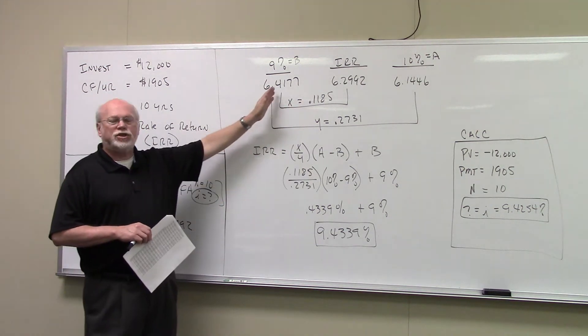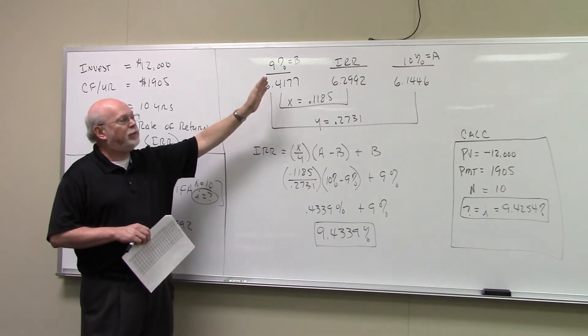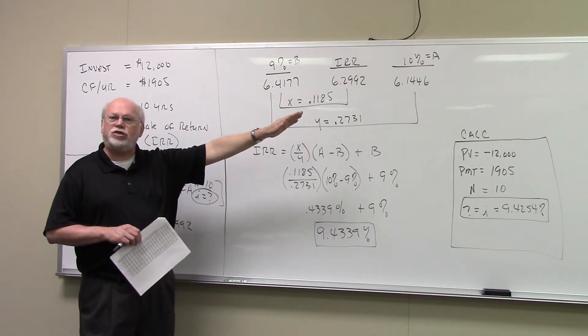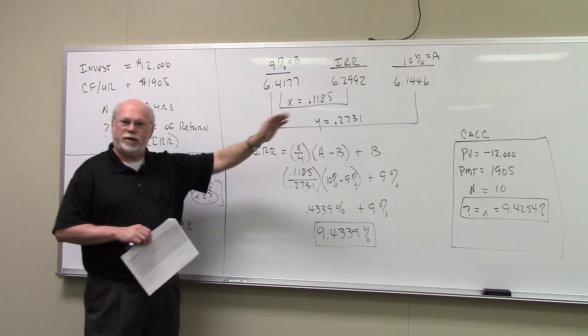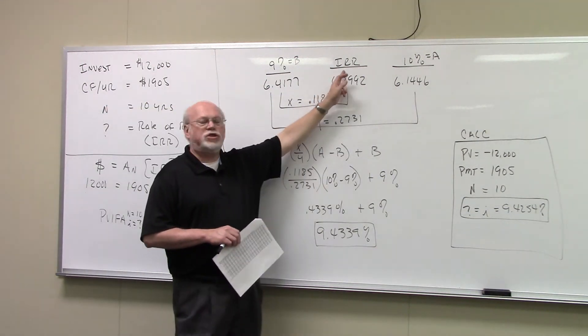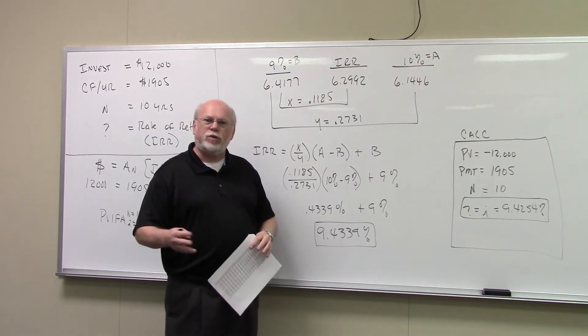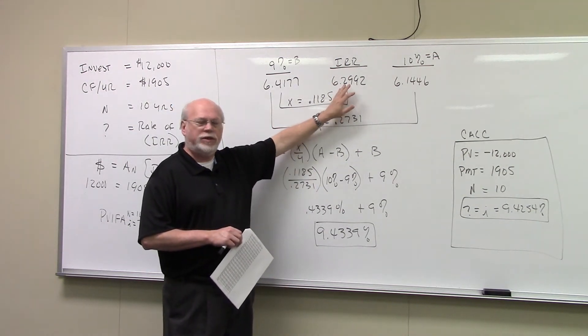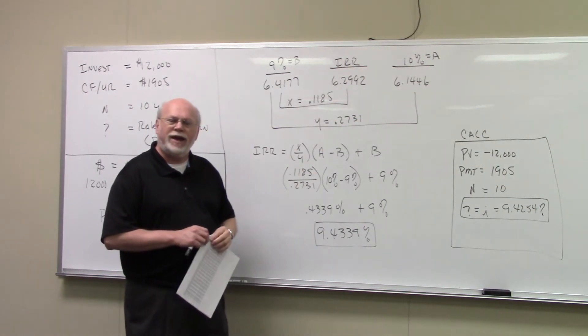We know the ends of the prongs. We know the rate of return is somewhere between 9% and 10%. And we know the interest factor associated with 9% and 10%. The unknown is always in the middle. We don't know what the rate of return is at this point. But we do know the interest factor associated with it is 6.2992.